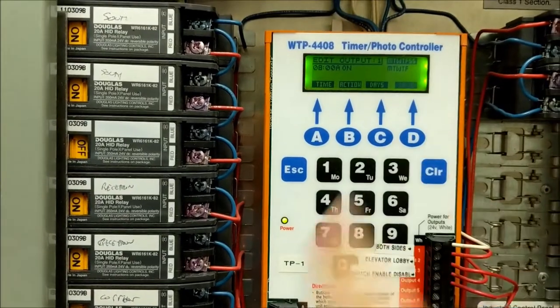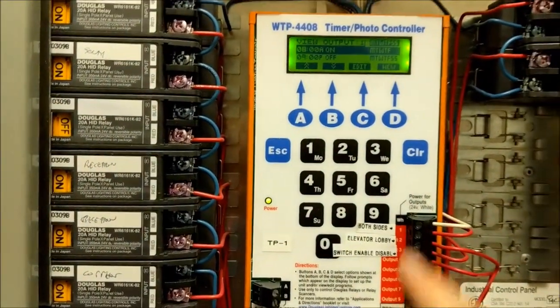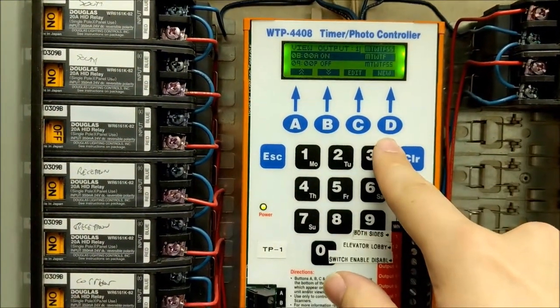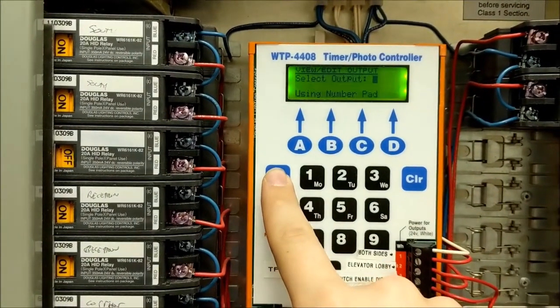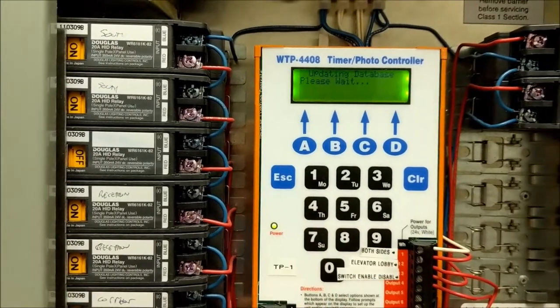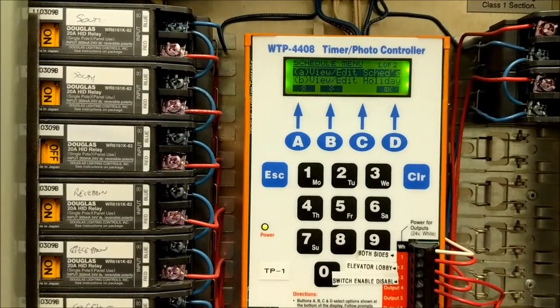And then when you're done, you would press Save. If you wanted to add a new event, there's a new here. And besides that, that is all. You just keep going back after you've made all the changes you want. And then you're done.